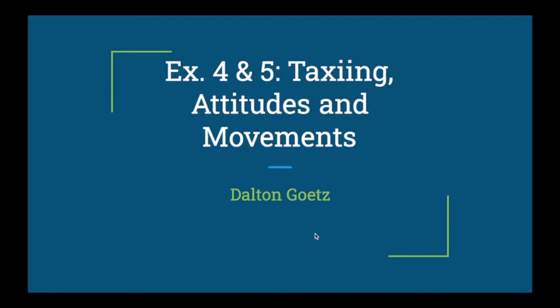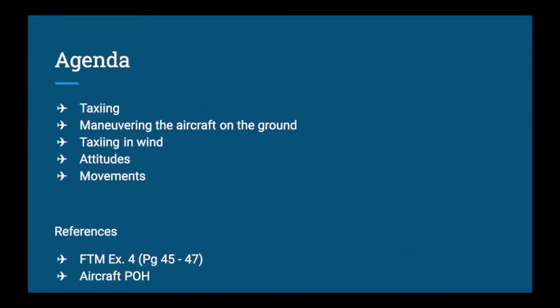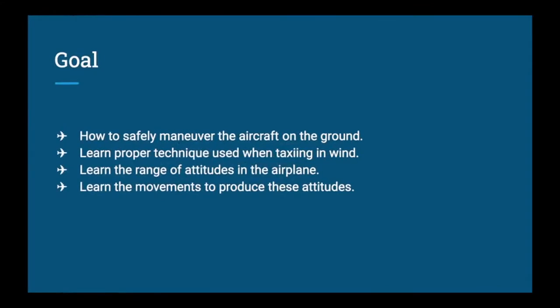Today we are going to cover lesson one of your flight training syllabus, which is exercises four and five: taxiing, attitudes, and movements. We're going to cover what taxiing is, how to maneuver the aircraft on the ground, proper taxi controls in wind, and the range of attitudes and movements in the airplane for the air part of the lesson. The goal is to learn how to safely maneuver the aircraft on the ground and learn the proper technique used while taxiing in wind, as well as the different attitudes and how to produce them.